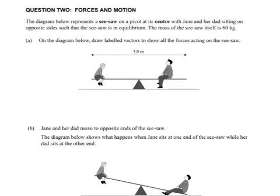2013 Level 2 Mechanics Question 2, Forces in Motion. The diagram below shows a seesaw on a pivot out of its center, with Jane and her dad sitting on opposite sides such that the seesaw is in equilibrium. When you see equilibrium, forces and torques are zero - net forces and net torque are zero.